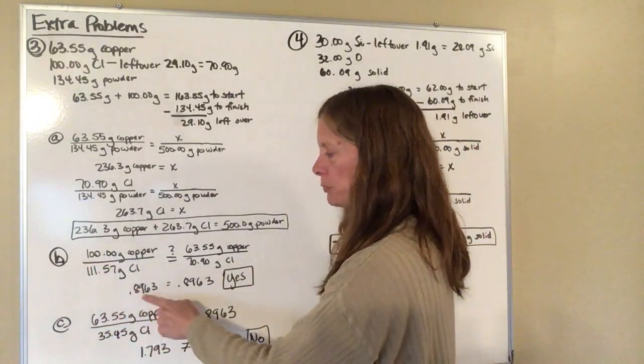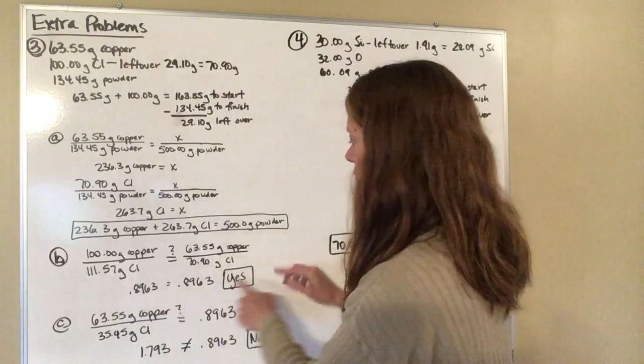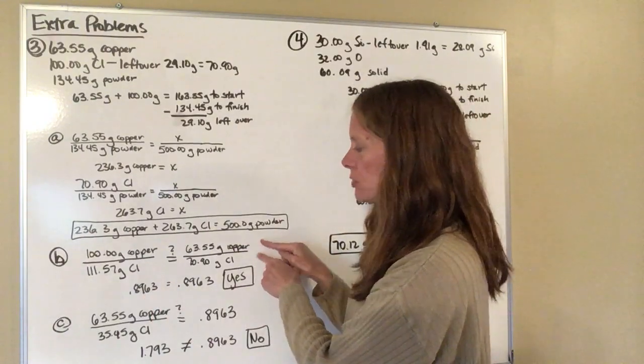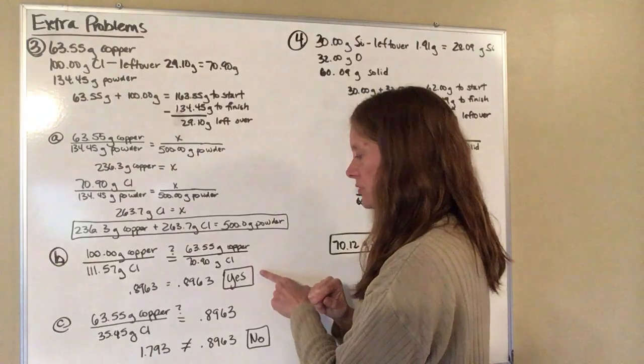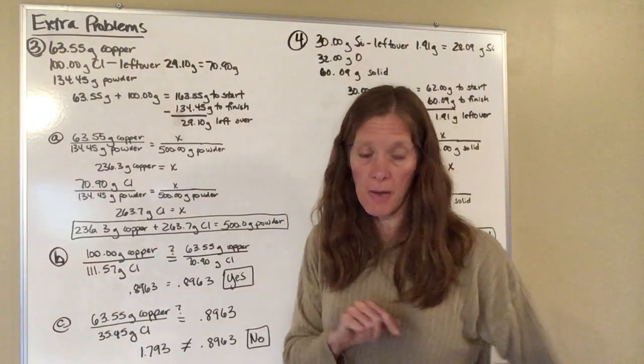So when you compare, when you divide these two numbers, you get 0.8963. When you divide the numbers from part A, you also get 0.8963. And so the answer should be yes, they are the same powders.